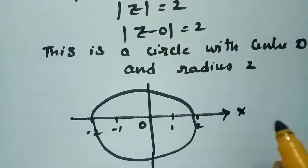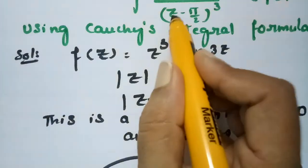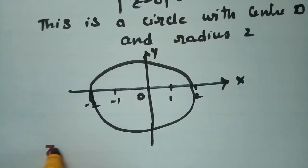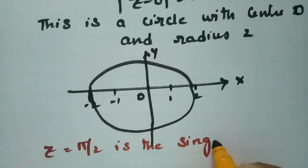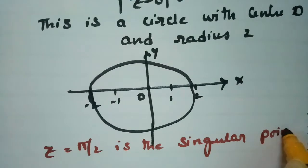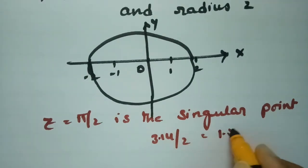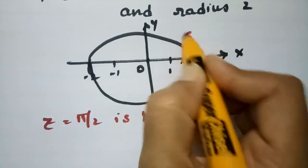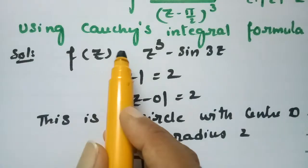This is the circle on the x-axis and y-axis. The point z = π/2 is the singular point. Since π/2 = 3.14/2 = 1.57, this point lies inside the circle |z| = 2. Therefore, Cauchy's integral formula is applicable.